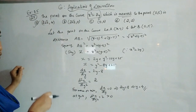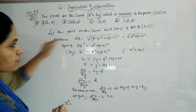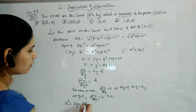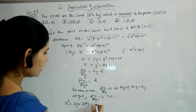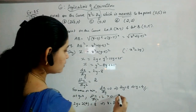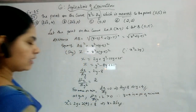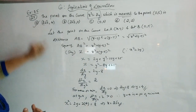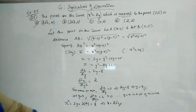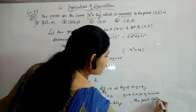But if it is a full question (not MCQ), you also have to find x. Replacing y = 4 into x² = 2y gives x² = 8, so x = 2√2. Therefore, y = 4 is a point of minima, and the nearest point on the curve is (2√2, 4).